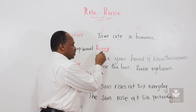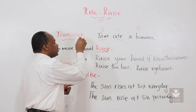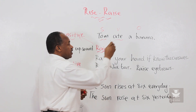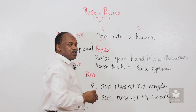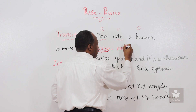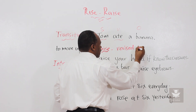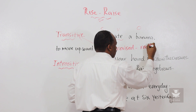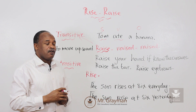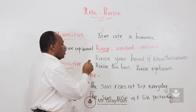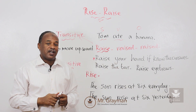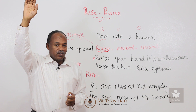So 'raise' is a transitive verb — it needs an object. The past of 'raise' is 'raised,' and the past participle is also 'raised.' It is a regular verb. Here we say 'raise your hand if you know the answer.' Raise your hand if you know the answer.